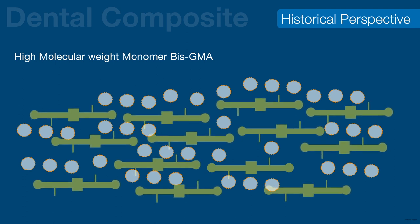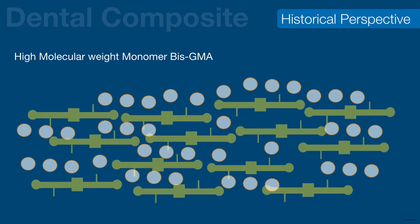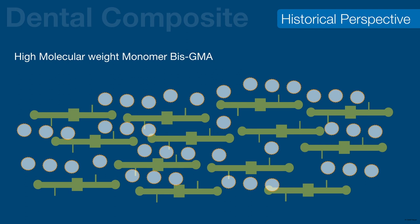Bis-GMA (Bowen's resin) possesses the viscosity of honey, and therefore there is a limit to the amount of filler particles that can be added without affecting handling properties. The larger molecules of the matrix do not allow more fillers to be packed in, due to strong Van der Waals interactions among Bis-GMA molecules creating virtual gaps. This created a need to decrease monomer viscosity so that more fillers could be added via low-molecular-weight monomers.